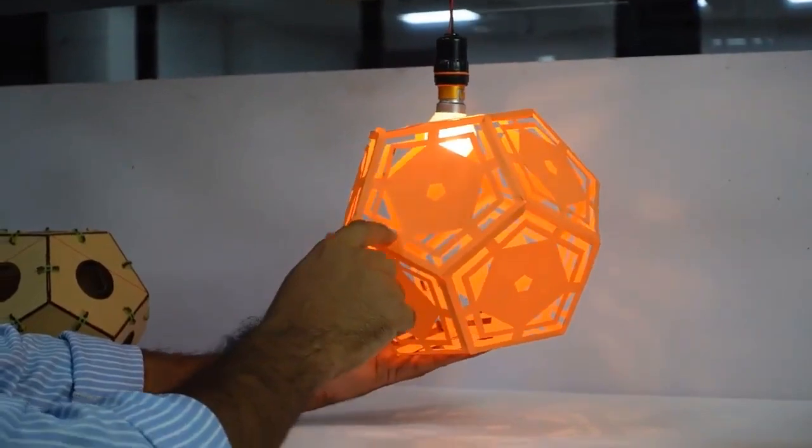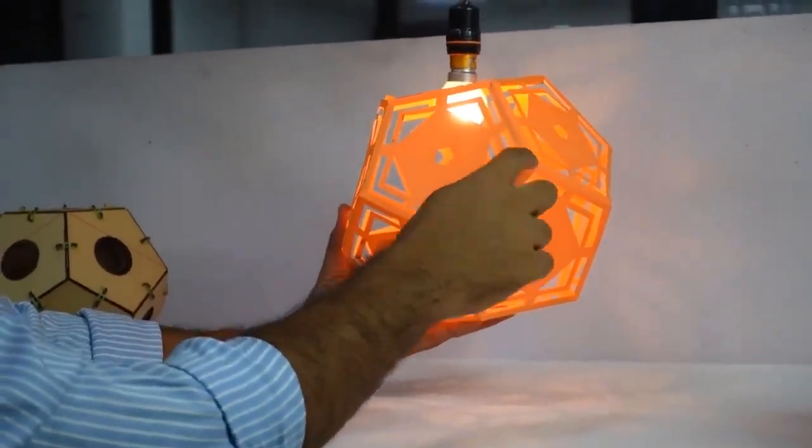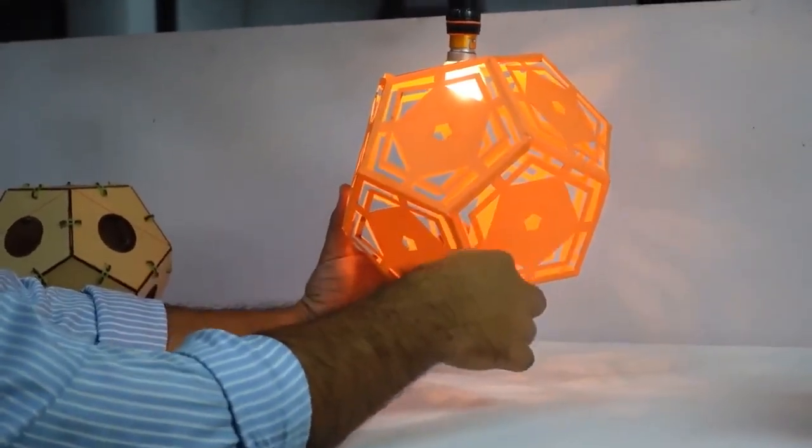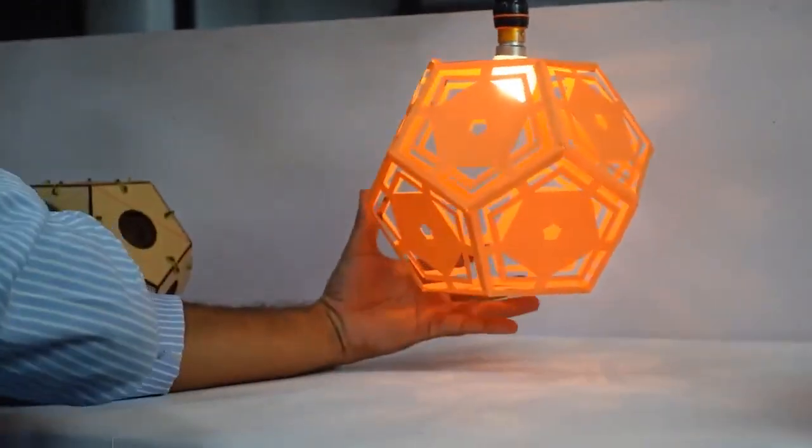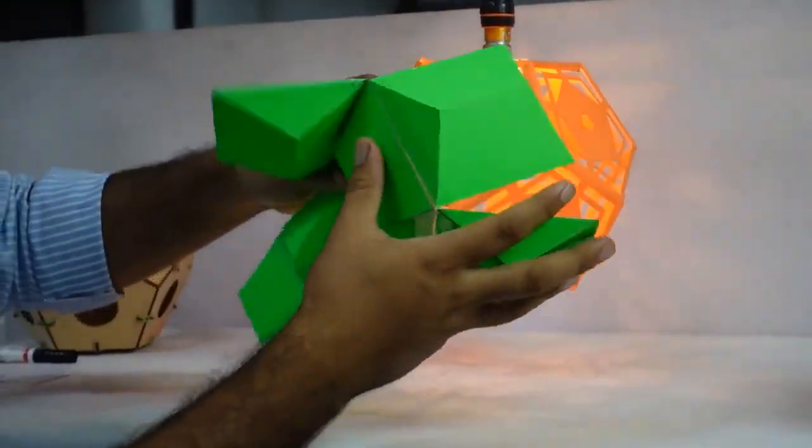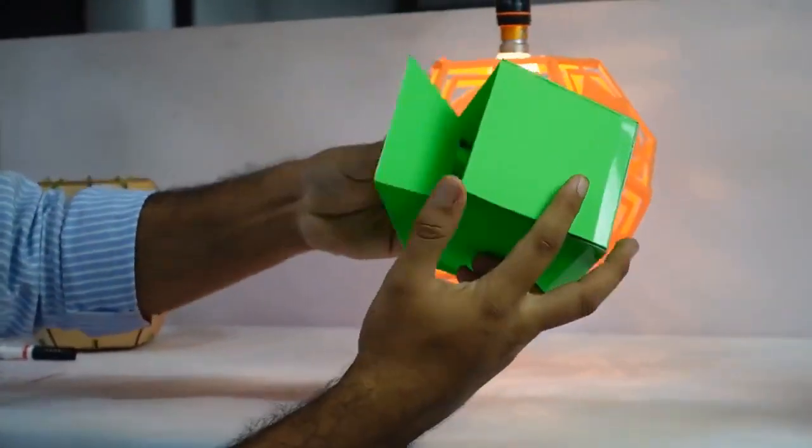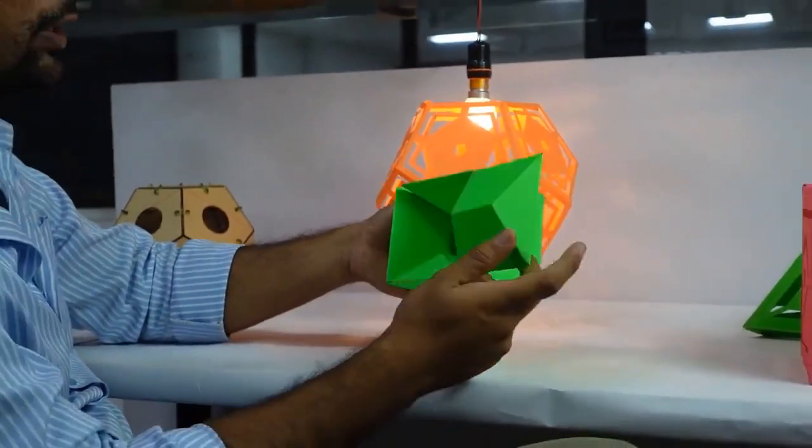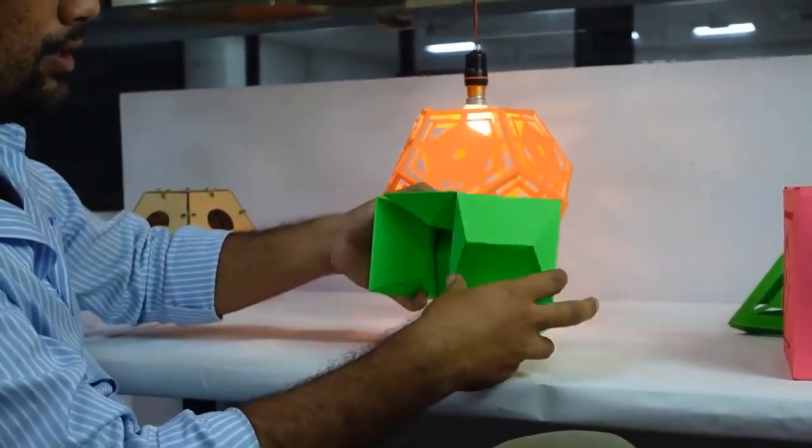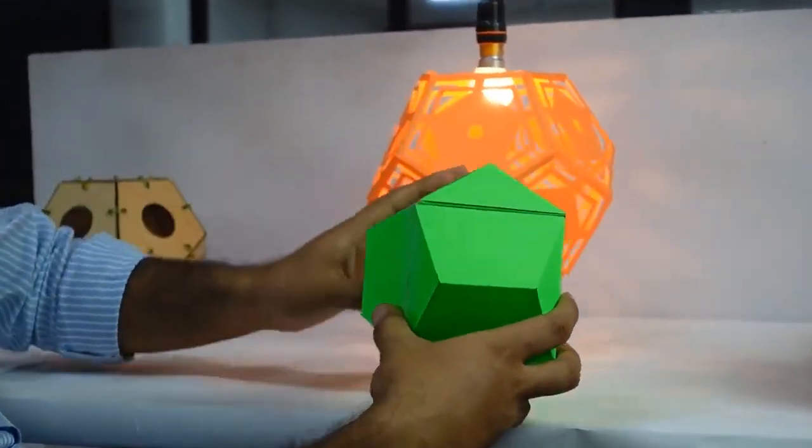Now, if I join all the diagonals of the dodecahedron, a cube is formed, and it will look something like this structure I am showing you. So this is our cube. Now, if I open it, it will form a dodecahedron.